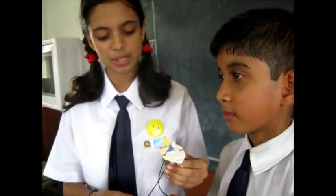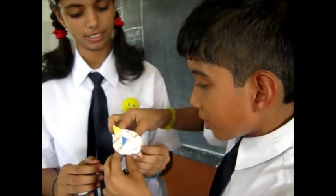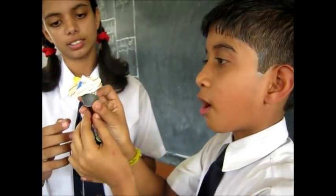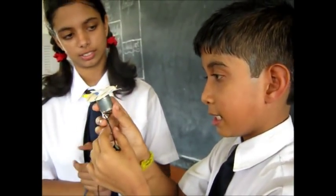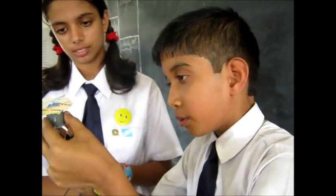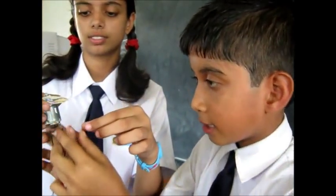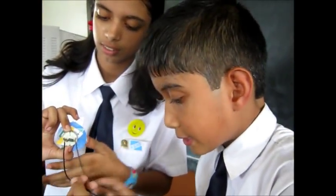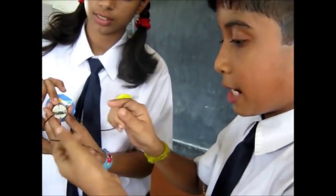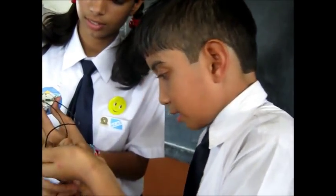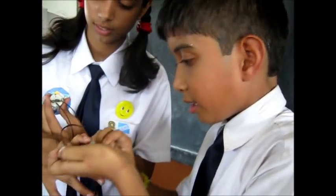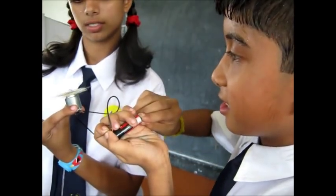Hello friends. This is my friend Hrithik Chaudhary of Class 5. Our friend will demonstrate how he has made a spark. First, we have to take out the motor from current engines, and then attach two wires here. Then we have to connect it with the battery. Now the fan will rotate.